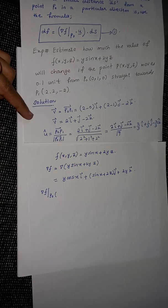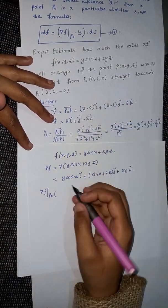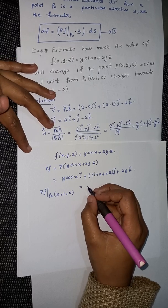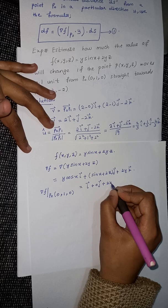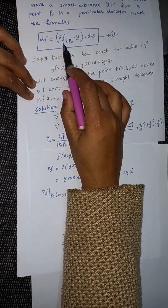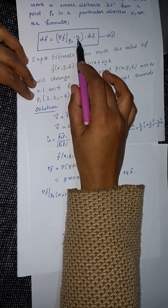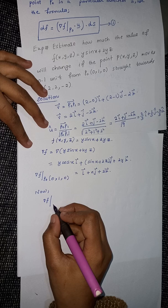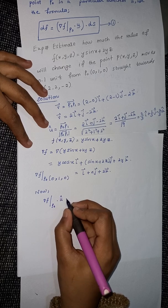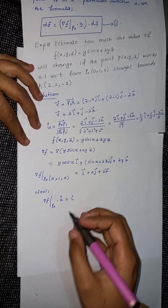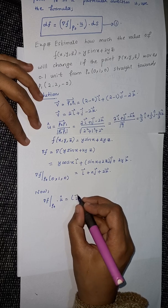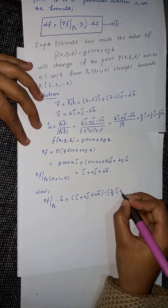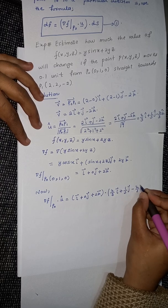The gradient of f at point p₀ — which is the point already given — is obtained by substituting p₀ into the gradient expression. The resulting vector is i + 0j + 2k. Now we take the dot product of this gradient at p₀ with the unit vector û = (2/3)i + (1/3)j − (2/3)k.